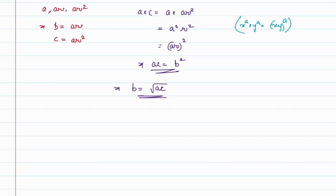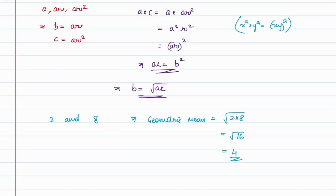Let's find the geometric mean between 2 and 8. Using the formula, the geometric mean equals the square root of their product, that is the square root of 2 into 8, which is the square root of 16, equal to 4. So 4 is the geometric mean between 2 and 8. When we insert 4 between 2 and 8, it becomes 2, 4, 8, which is a GP.